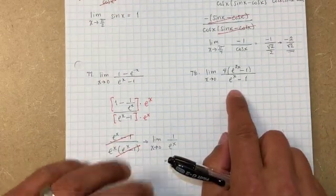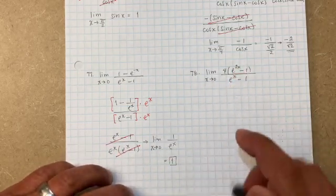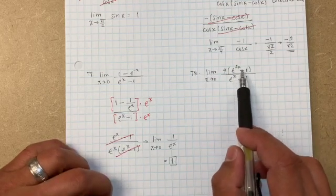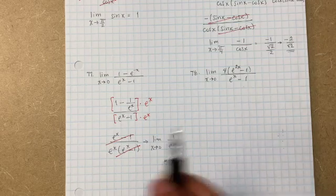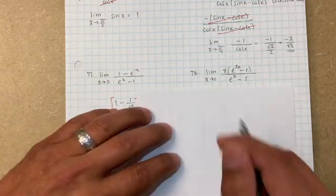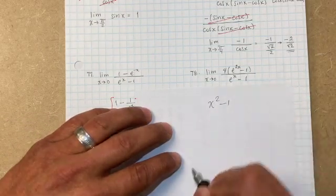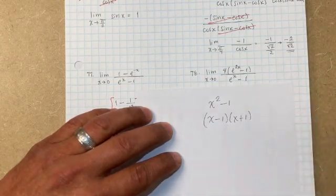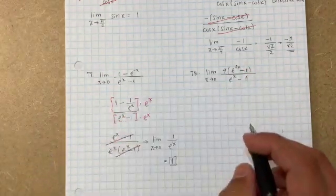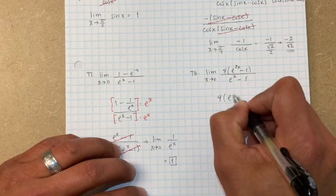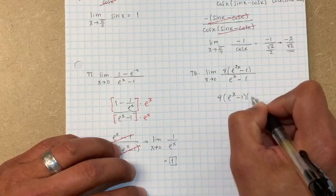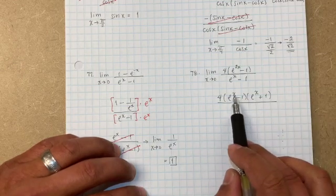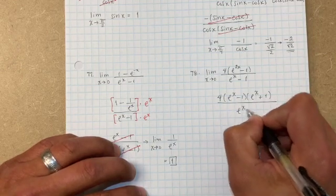What about the next one? I like this problem. If you plug it in you're going to get the same thing — zero over zero. But this is nice because you can actually factor this. Remember how you factor x squared minus 1? You'd do (x minus 1)(x plus 1). Well this is the same thing except with e. That's going to give me 4(e to the x minus 1)(e to the x plus 1) on top. And then on the bottom you just have e to the x minus 1.